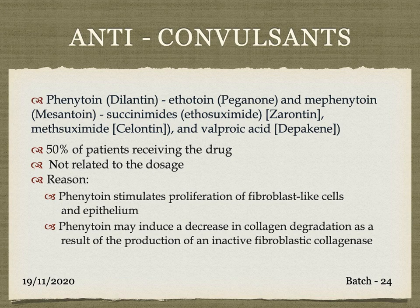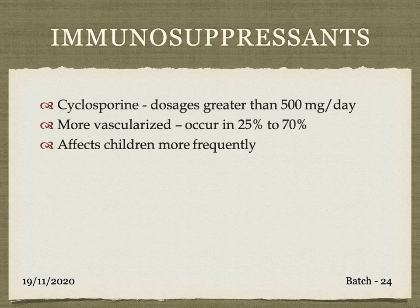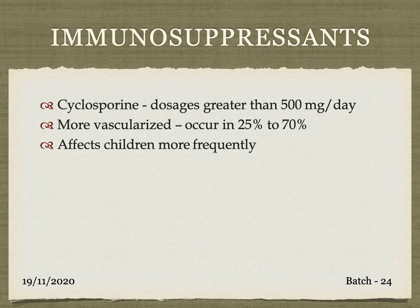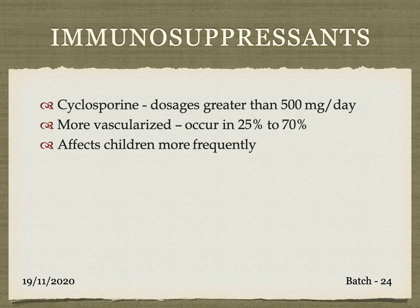That is how anticonvulsants produce gingival enlargement. The next drug is immunosuppressants — the example is cyclosporine. This is a dose-dependent drug, whereas phenytoin is duration-dependent. A cyclosporine dosage greater than 500 milligrams per day can induce gingival enlargement. There will be more vascularization, and it affects children more frequently.